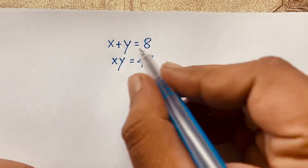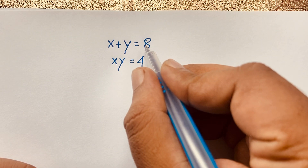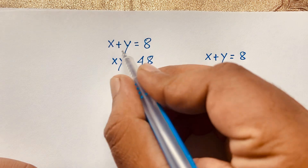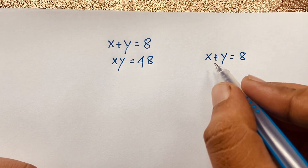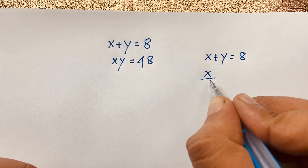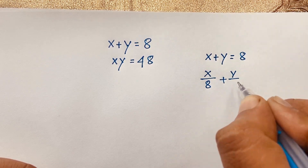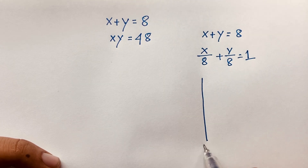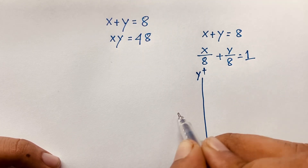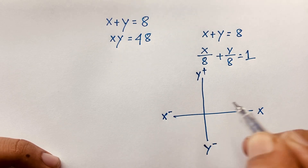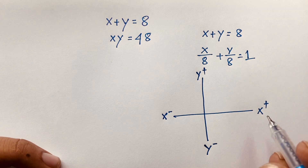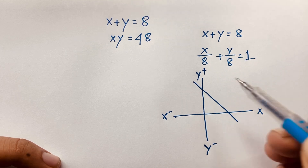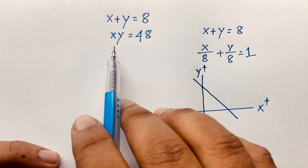First of all, I draw here X plus Y is equal to 8. So one of these is X plus Y, it will be 8. If I divide both sides by 8, I can see that it will be X over 8 plus Y over 8 is equal to 1. Now I can see that this is Y and this is X. If I draw this step line, I can see that X is equal to 8 and Y is equal to 8. So we have to find out a nice step line. But we have to find out the other equation: X times Y is equal to 48.